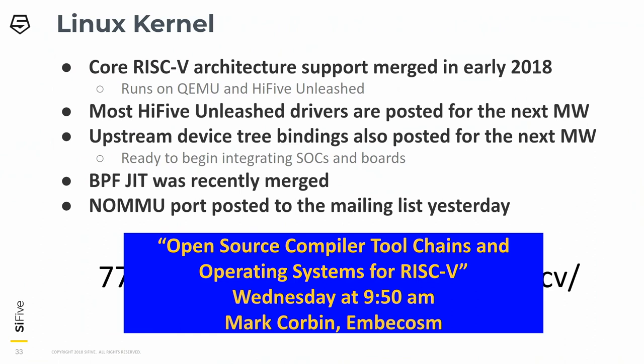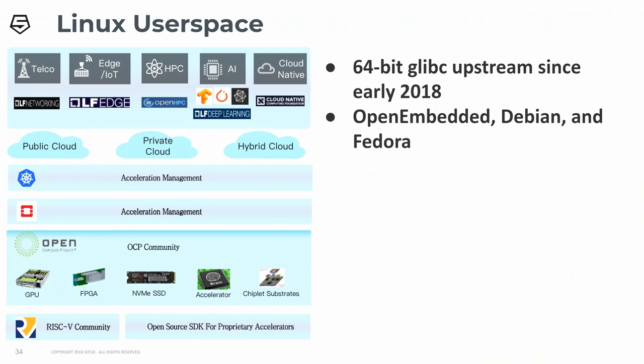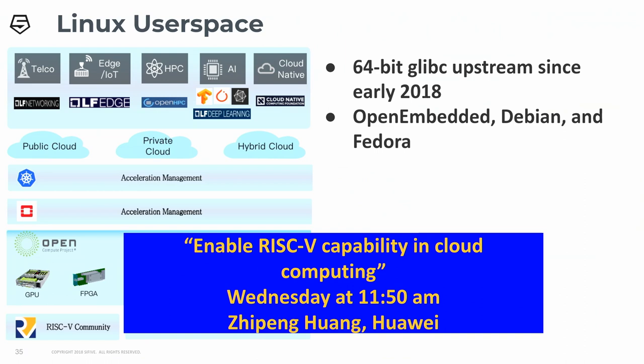There are also a lot of user space programs required for Linux. We've had glibc for 64-bit upstream since early 2018, but we don't have the 32-bit port upstream yet — there are some issues with 64-bit time_t support we're waiting on. The hope is to target the next glibc release. There are a handful of distributions bouncing around, and there's a specific talk about cloud computing on RISC-V systems later today.